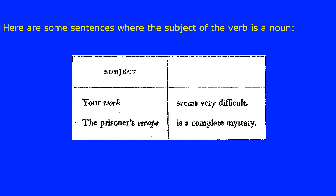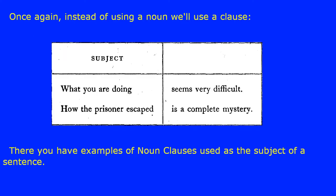Here are some sentences where the subject of the verb is a noun: your work seems very difficult; the prisoner's escape is a complete mystery. Instead of using a noun we'll use a clause: what you are doing seems very difficult; how the prisoner escaped is a complete mystery. There you have examples of noun clauses used as the subject of a sentence.